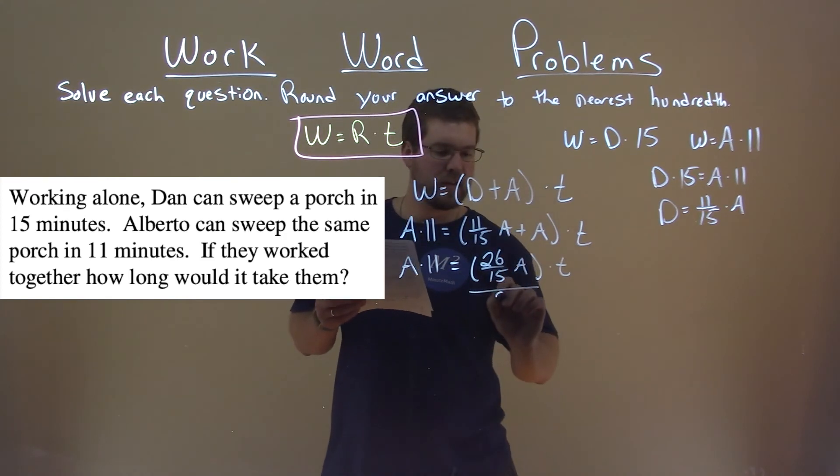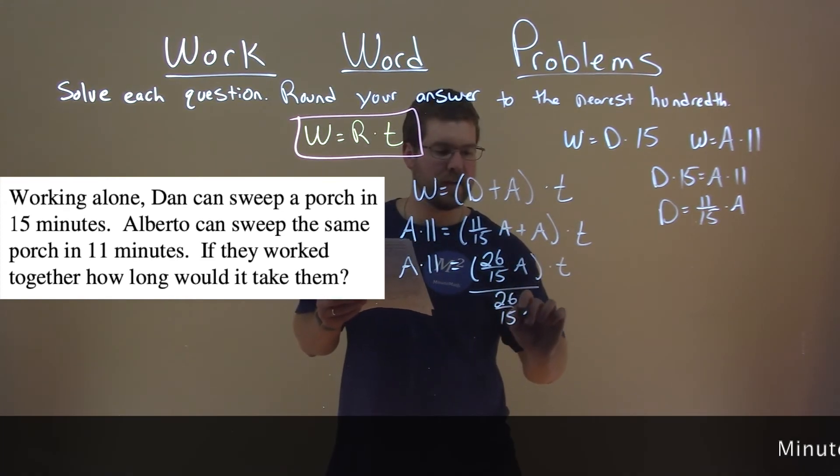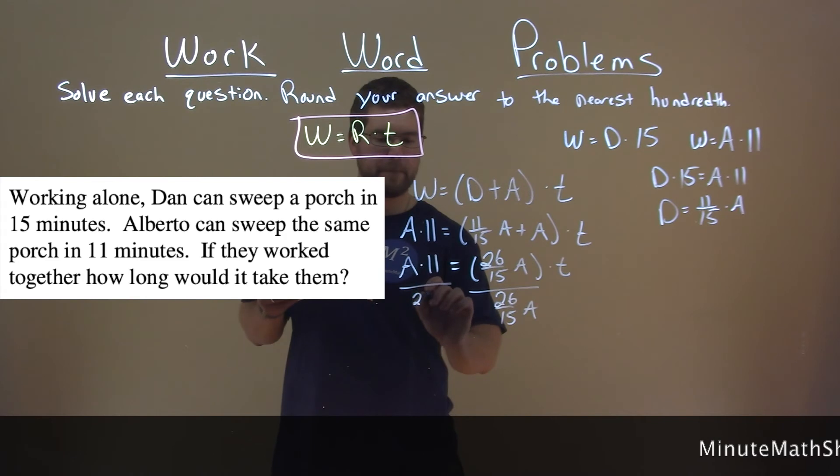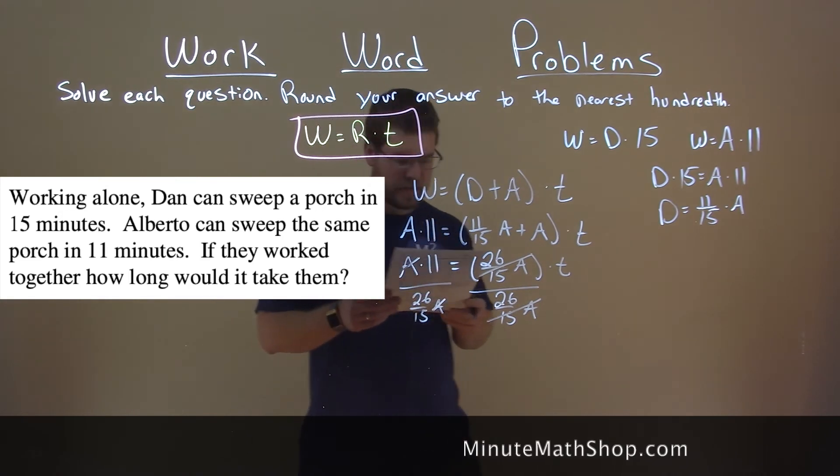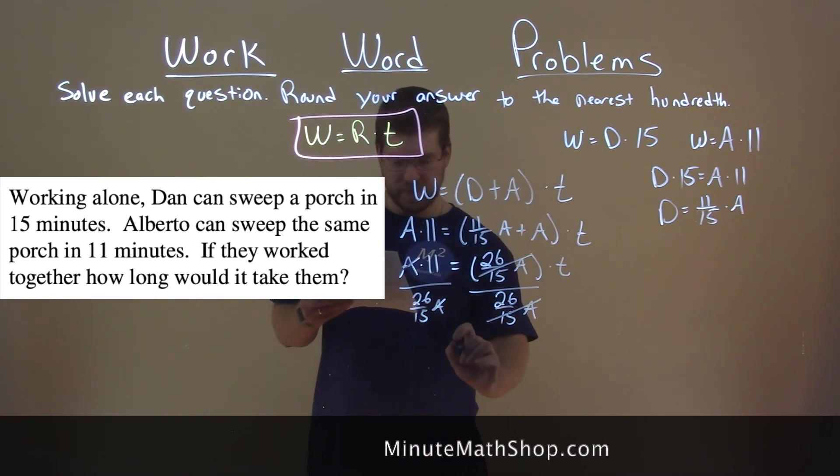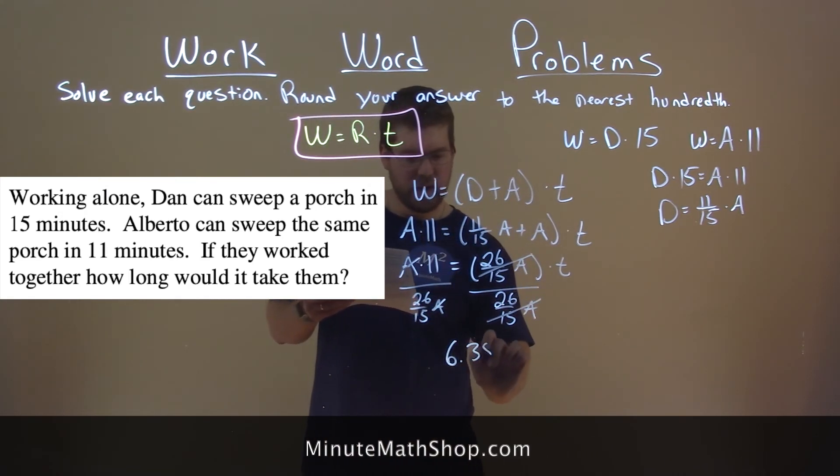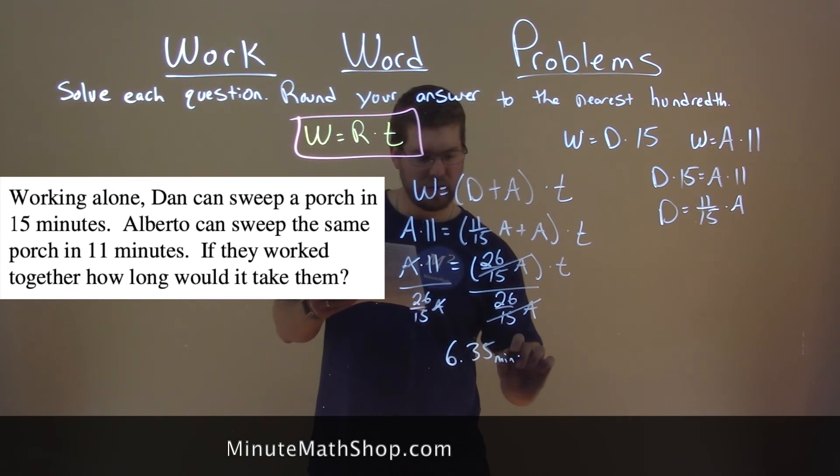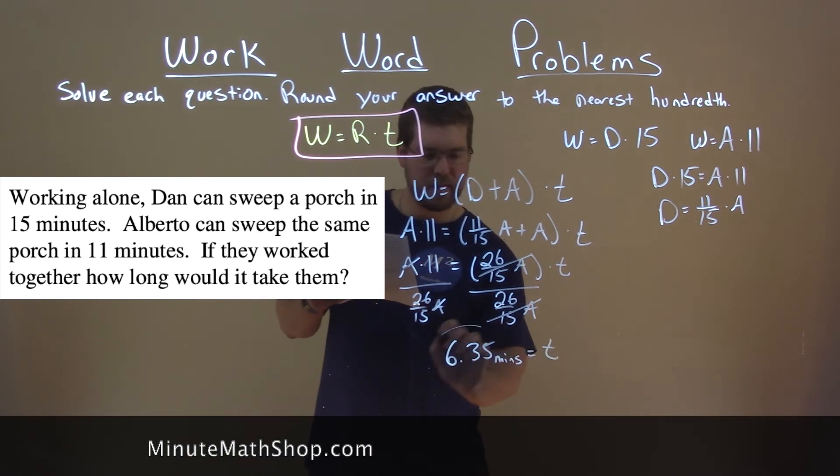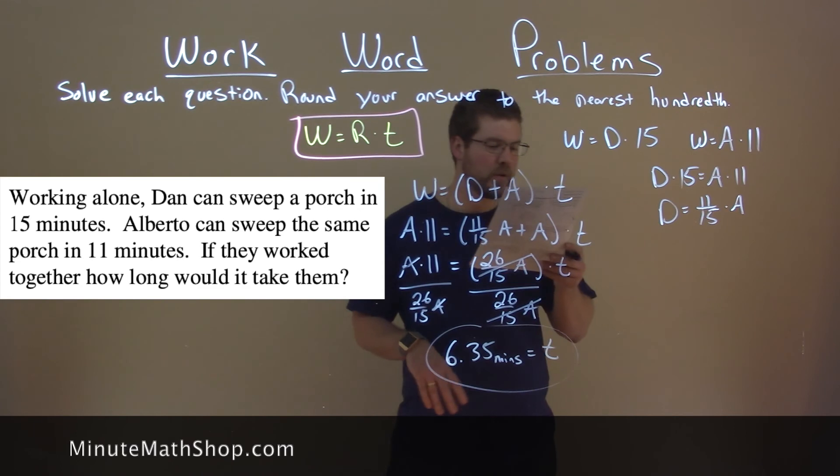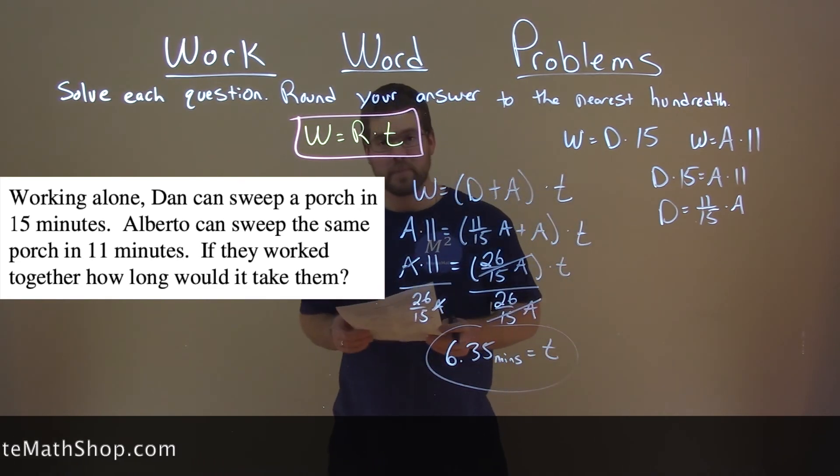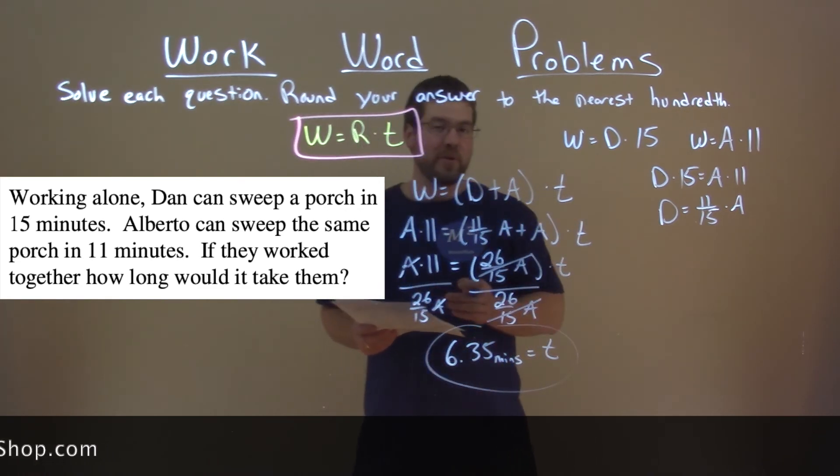We divide both sides by 26 over 15 A. These cancel, variable A cancels, and 11 divided by 26 over 15 is 6.35, and that's minutes here, is equal to our time. And that is how long it would take them if they worked together.